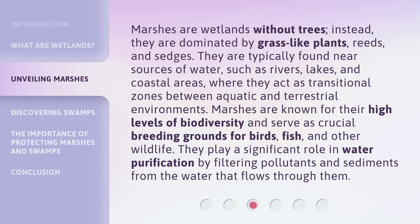Marshes are wetlands without trees. Instead, they are dominated by grass-like plants, reeds, and sedges. They are typically found near sources of water, such as rivers, lakes, and coastal areas, where they act as transitional zones between aquatic and terrestrial environments. Marshes are known for their high levels of biodiversity and serve as crucial breeding grounds for birds, fish, and other wildlife. They play a significant role in water purification by filtering pollutants and sediments from the water that flows through them.